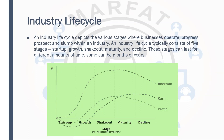In some books, the shakeout and maturity stages are combined because they share similar characteristics — that is why some books take them together. So: startup, growth, shakeout, maturity, and decline — this is the industry lifecycle. If you are operating in a particular industry, you need to analyze where you currently stand. Maybe your industry is going down, or maybe there will be no need for your industry in the future, as we have seen with many industries that no longer exist.